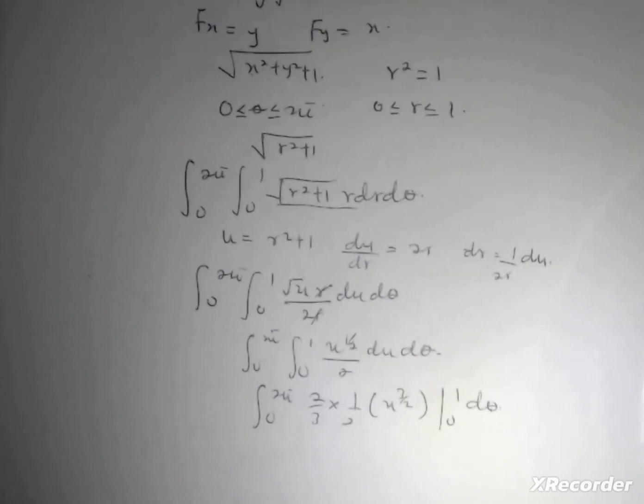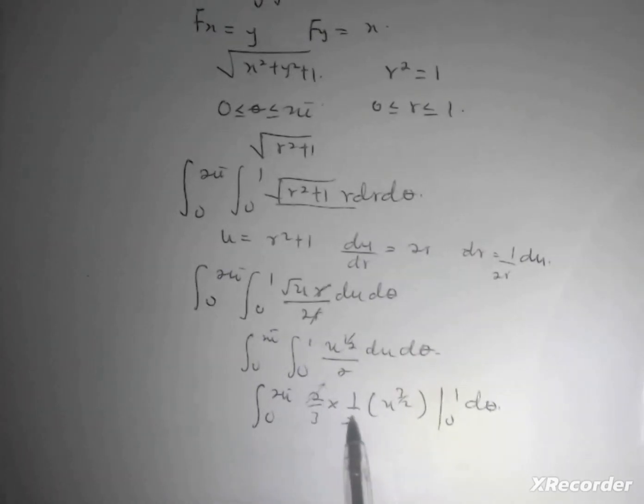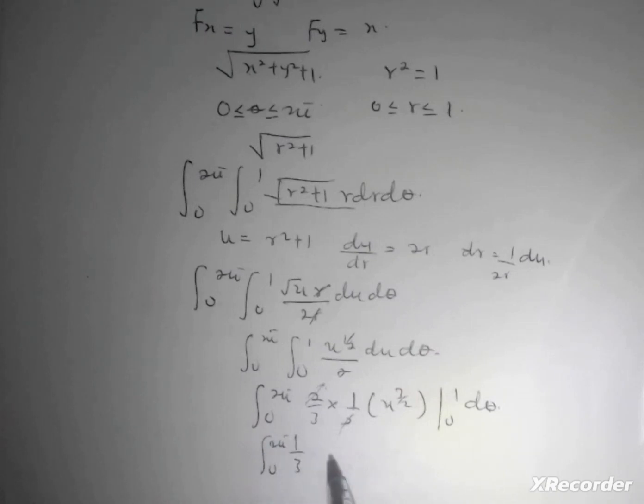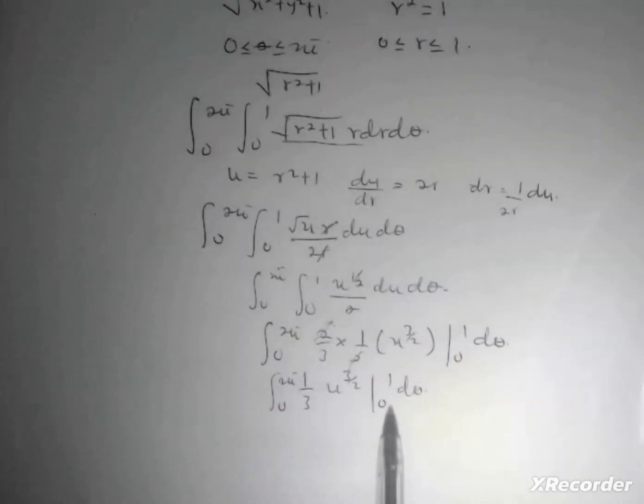So I have (1/3) × u^(3/2) evaluated from 0 to 1. When I put 1, I get 1/3. When I put 0, everything is 0.